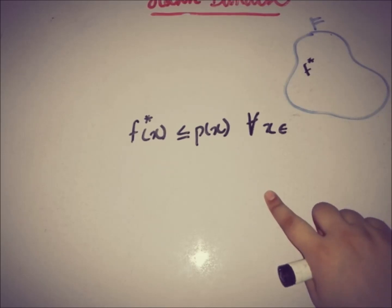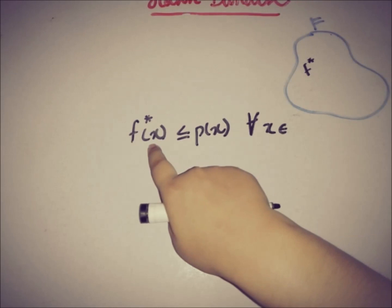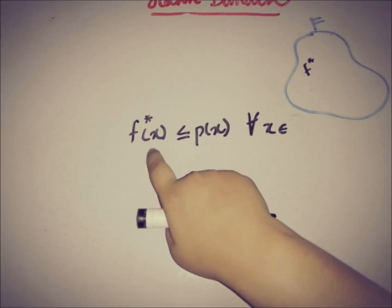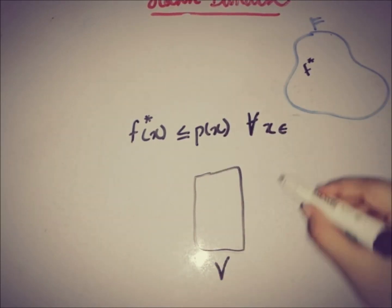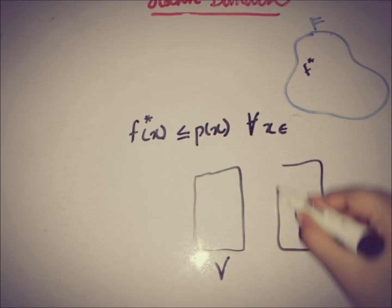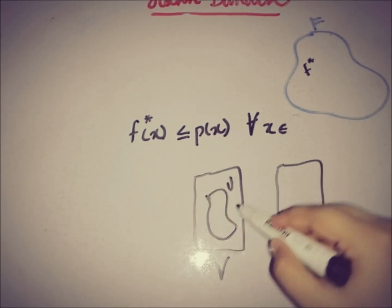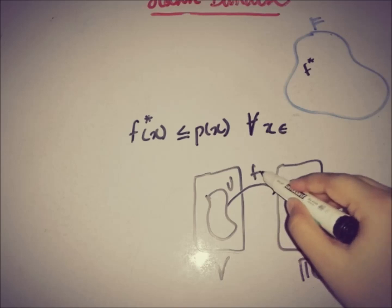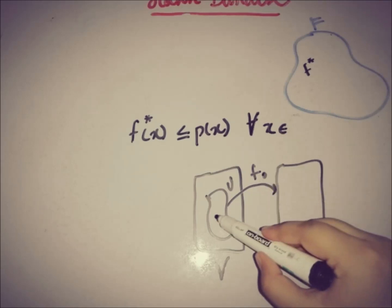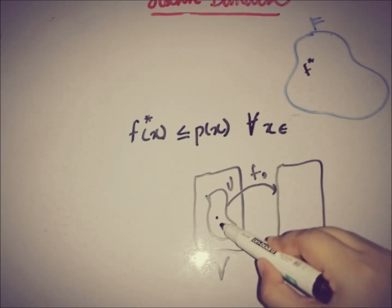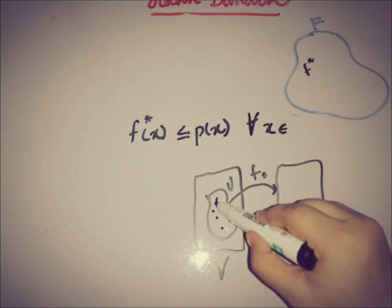The majorization condition requires that f*(x) ≤ p(x) for all x taken from the domain of f*. We are considering a space V and field ℝ, with subspace U, and taking a functional f₀ from U to ℝ. The elements in the domain of f₀ are from U.